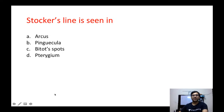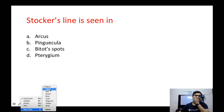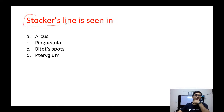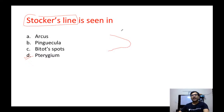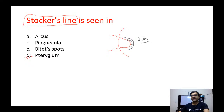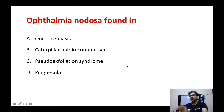Next question: Stocker's line is seen in which of the following — arcus, pinguecula, Bitot spots, or pterygium? Stocker's line is seen in pterygium. It is an iron deposition line at the head of the pterygium, at the junction with the cornea.